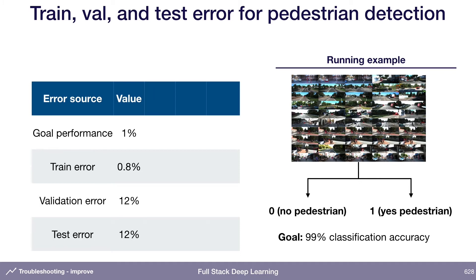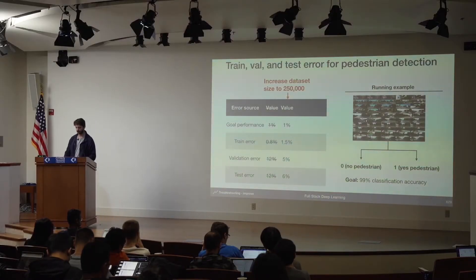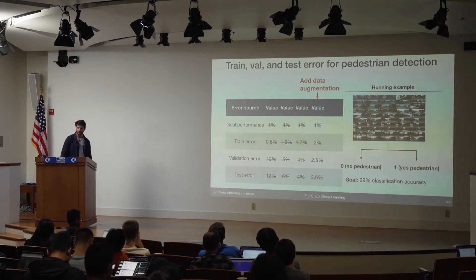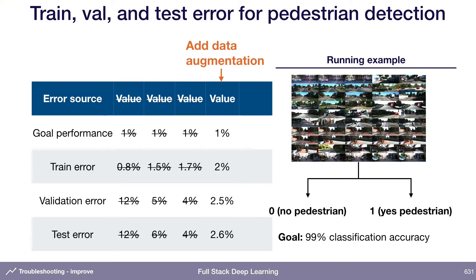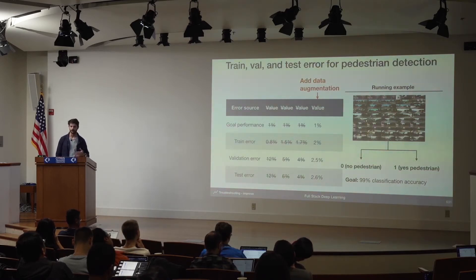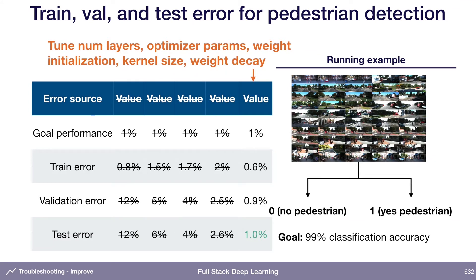Let's walk through an example of addressing overfitting. Our training error looks really good but validation error is bad. We're working with a tiny dataset of 10,000 examples, so we might try increasing it to 250,000 examples — that could make our validation error much better, though it would probably hurt training error too. Then we could try adding regularization like weight decay, and some data augmentation like flipping or rotating images. Now we're back in a regime where we're still overfitting a little but not very much. At this point, we're reasonably close to our goal performance in both training and validation error, so this is probably the time to do a big hyperparameter optimization sweep — tuning a bunch of hyperparameters could get both errors into our desirable range.